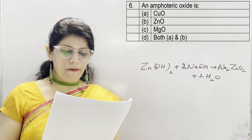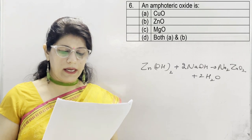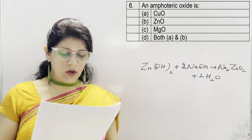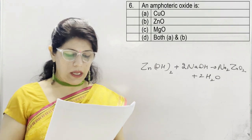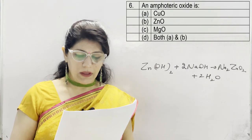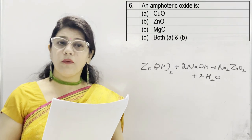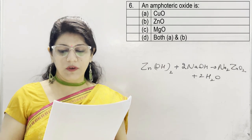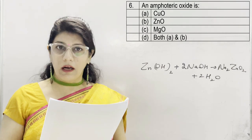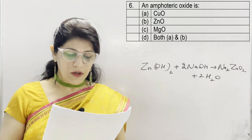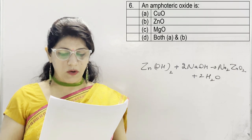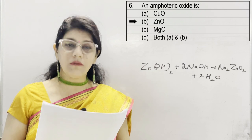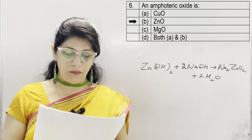In question 6, an amphoteric oxide is? Options: copper oxide, zinc oxide, magnesium oxide, D both A and B. We know the oxides of aluminium, lead, and zinc react with both acids and alkalis to form salt and water. In the given options, only zinc oxide is correct — option B.